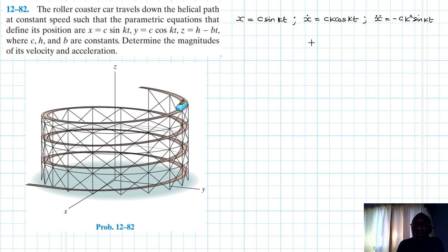Okay, then we have y = c cos kt. This one, y dot just equals -ck sin kt, and then y double dot